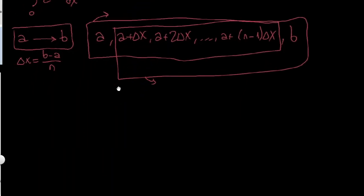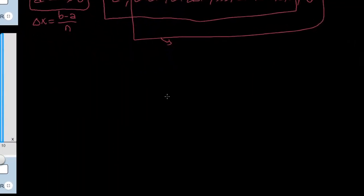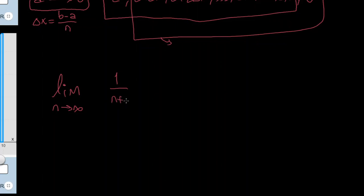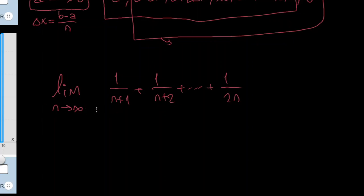Let's do one more example — this one is a bit more useful because it's a famous limit. Consider the limit as n goes to infinity of 1/(n+1) + 1/(n+2) + ... + 1/(2n). It doesn't look like a Riemann sum. If you put n equal to infinity, each term is 0, but you have n times 0 and n goes to infinity, so this is actually like infinity times 0 — it's indeterminate, we don't know. Let's write this thing like a Riemann sum.